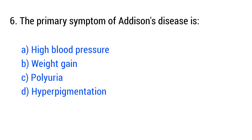Question No. 6. The primary symptom of Addison's disease is? The right answer is option D: Hyperpigmentation.